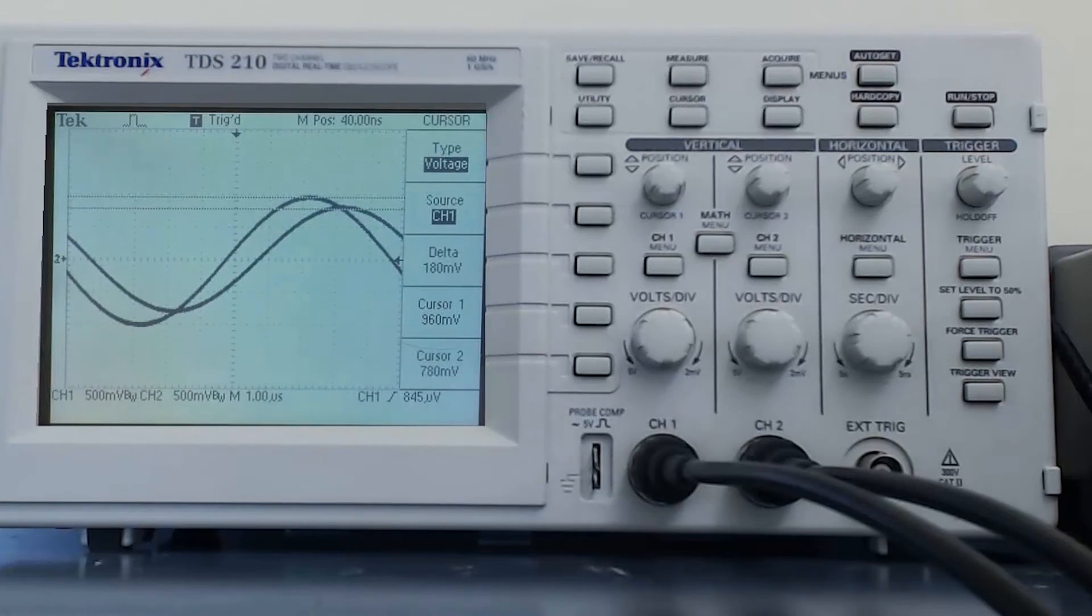One advantage that the cursor measurements have over using the oscilloscope is that the cursor measure functions do not need to have a full waveform displayed on the screen. So if I wanted to zoom in on the waveforms to see a very precise measurement using the cursor functions, I can do that.